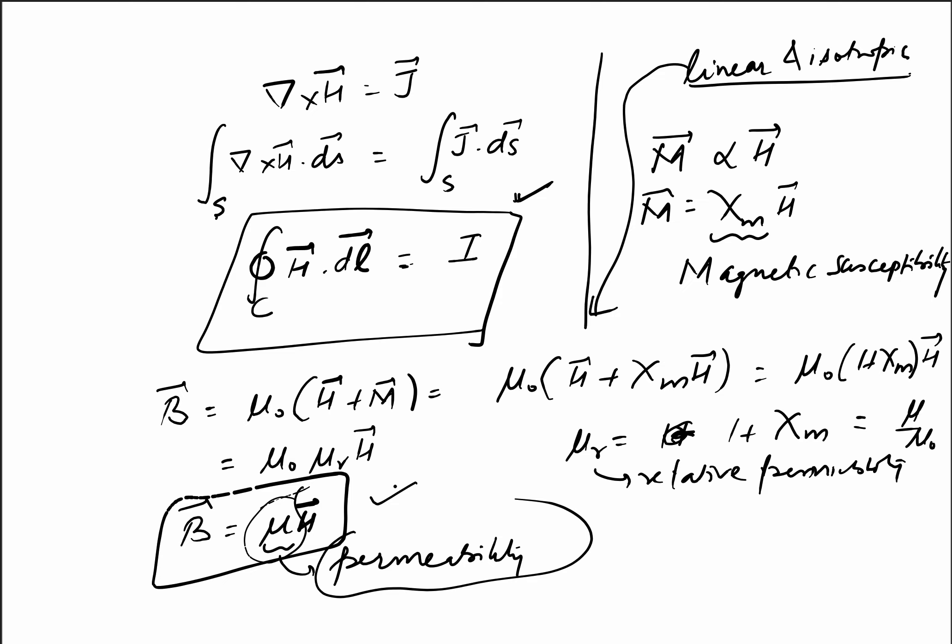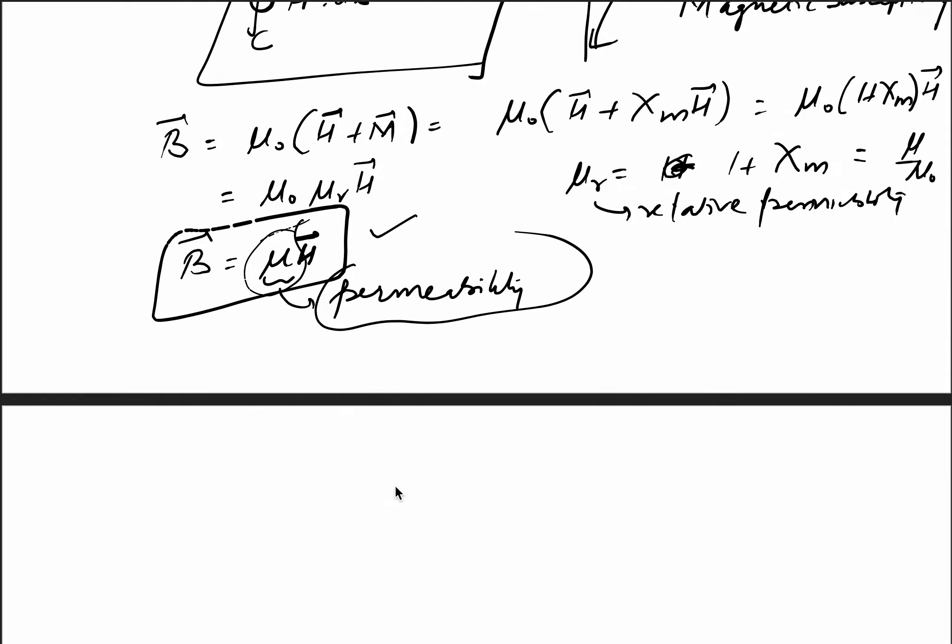For simple media, χₘ and μᵣ are constants. However, in other media, μᵣ can be a function of space coordinates. For many materials, μᵣ is very close to air. But for materials like nickel, cobalt, and iron, it can be very high—up to around 5000 or even 10⁶ for special alloys. In these cases, permeability depends not only on magnetic intensity magnitude but also on the material's previous history—there will be hysteresis.